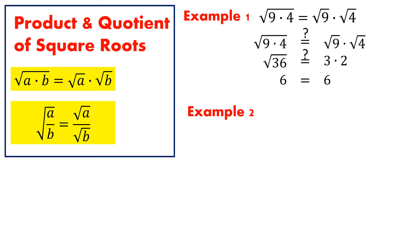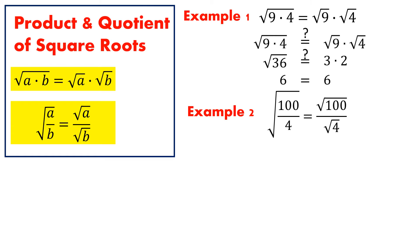In example 2, we need to show that the square root of 100 over 4 is equal to the quotient of square root of 100 and square root of 4. Again, let us look at the solution. The left-hand side and right-hand side are equal to each other.